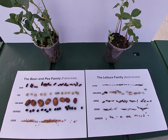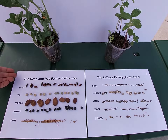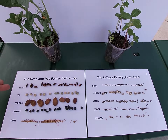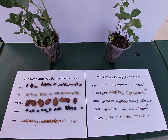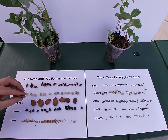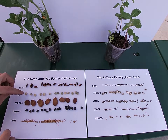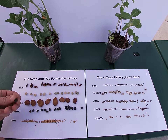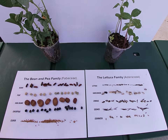Now let's take a look at these seeds as they're organized by family. On the left we have the bean and pea family, also known as Fabaceae. Looking at beans, peas, fava beans, chickpeas, and even clover, you'll notice that even though they vary a lot in size, shape, and color, they all have a point on the end, and you can always find a spot in the middle where the embryo is going to emerge from.